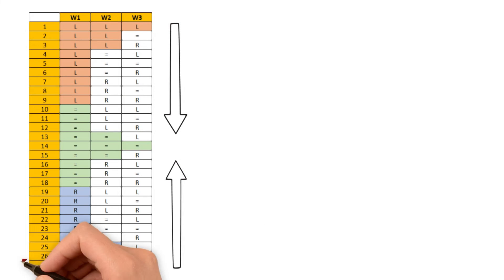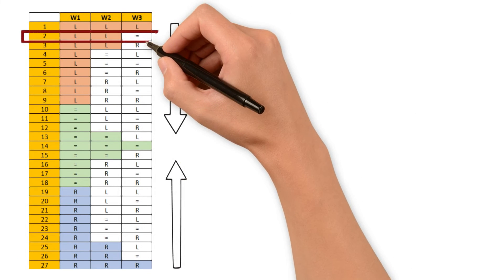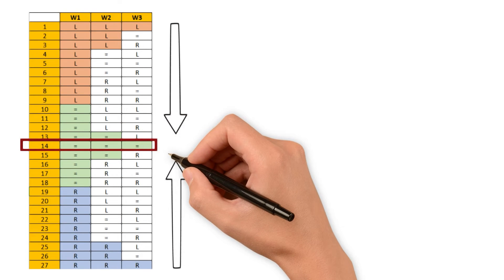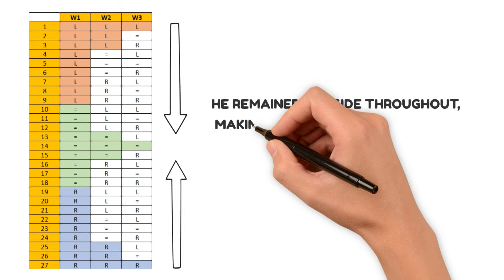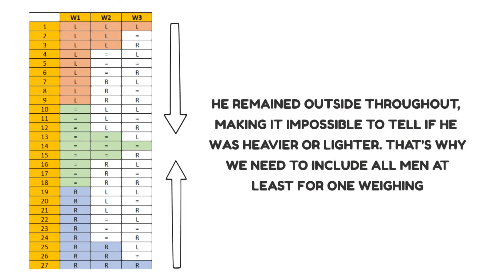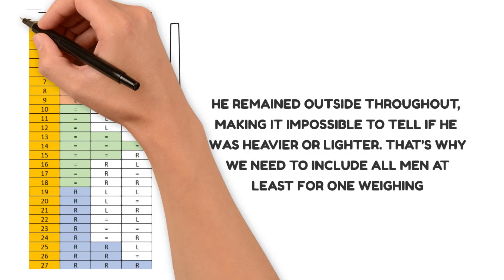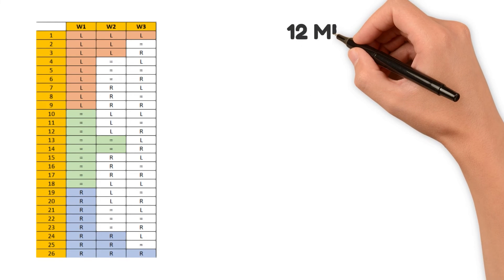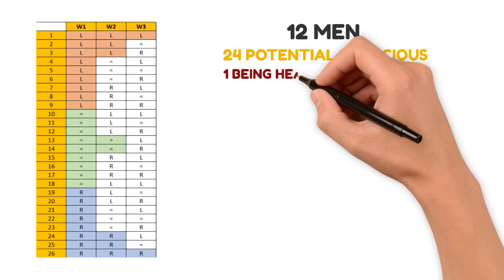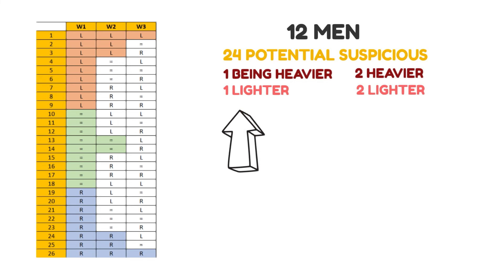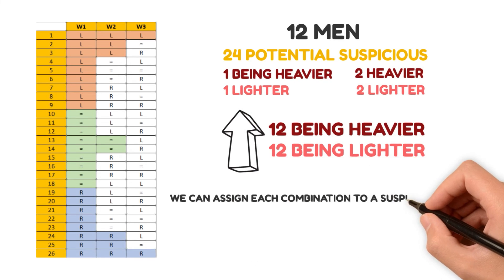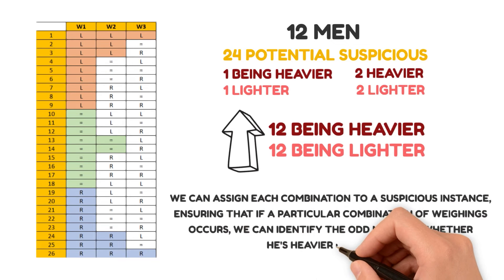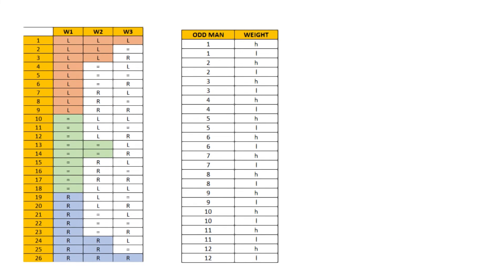For instance, LLL is the opposite of RRR. Similarly, LL equal is the opposite of RR equal. Now, if we have the combination equal equal equal, it means the odd man wasn't chosen in any of the three weighings. He remained outside throughout, making it impossible to tell if he was heavier or lighter. That's why we need to include all men at least for one weighing. So we can rule out the possibility of equal equal equal. With 26 possible combinations left, we have 12 men and 24 potential suspicious instances, like one being heavier, one lighter, two heavier, two lighter, all the way up to 12 being heavier and 12 being lighter. We can assign each combination to a suspicious instance, ensuring that if a particular combination of weighing occurs, we can identify the odd man and whether he's heavier or lighter.